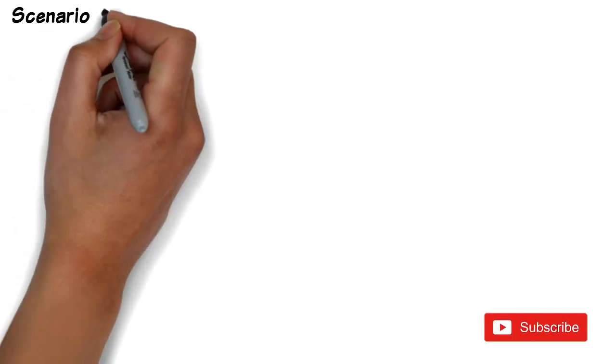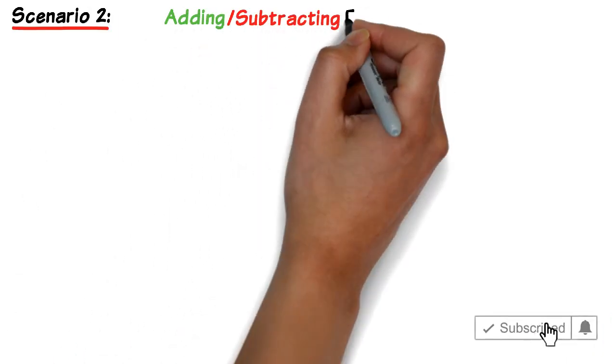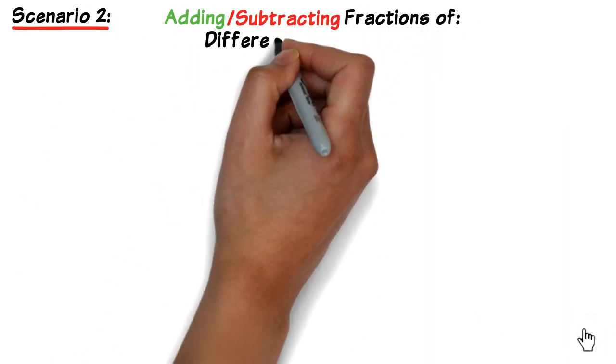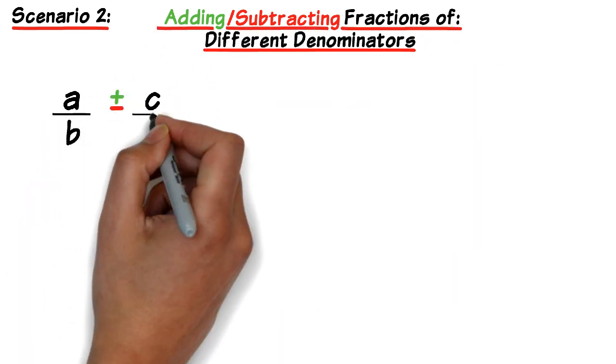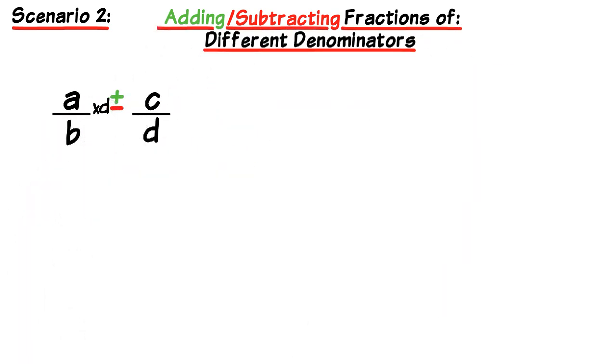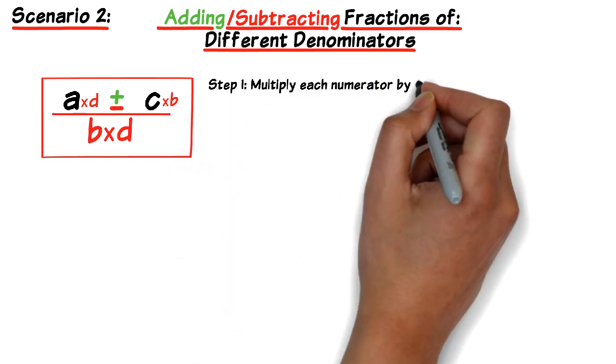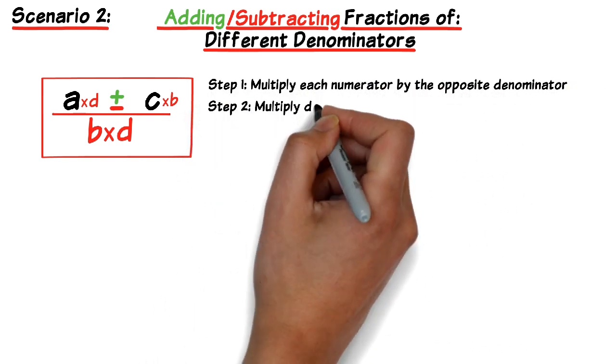Let's now take a look at the case when we have fractions of different denominators. In this case we multiply each numerator by the opposite denominator. And we also multiply both the denominators together. So that we have one common denominator. After which since the denominators have now become the same, we can follow the same principles as we did earlier. Where we now just add or subtract the numerators.